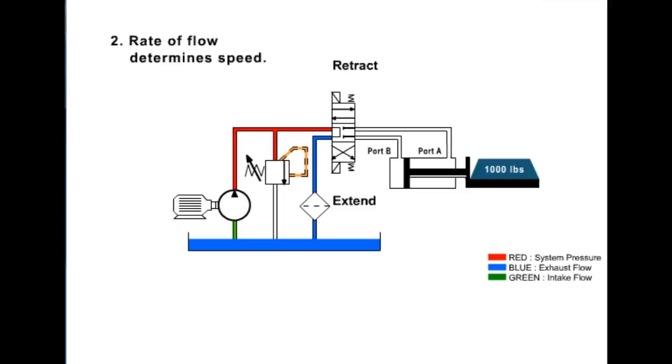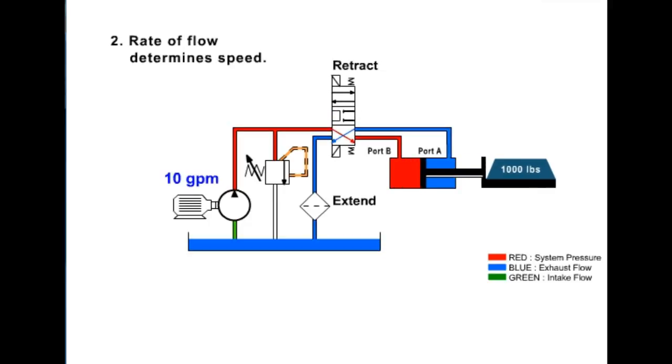Principle 2: Rate of flow determines speed. Rate of flow is usually measured in gallons per minute or GPM. GPM is determined by the pump. Changes in pump output flow will change the speed of the actuator.